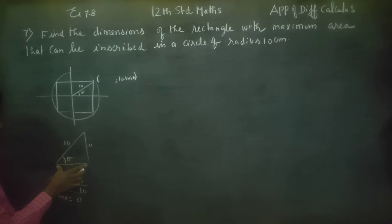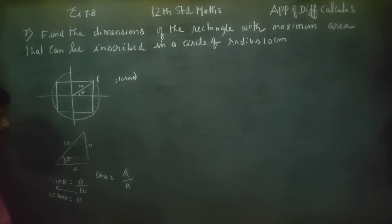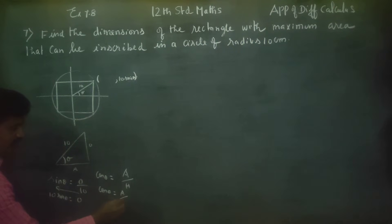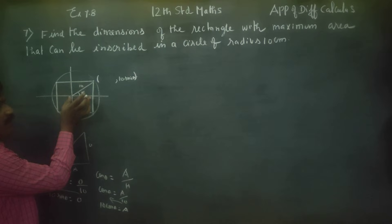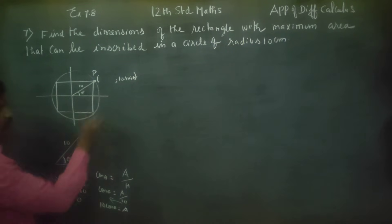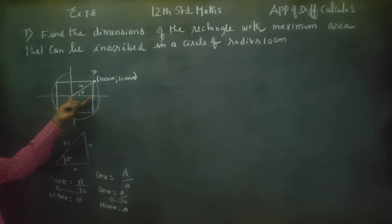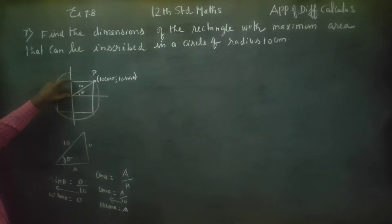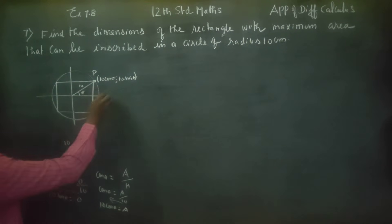Now for the x-coordinate: cos theta is equal to adjacent side by hypotenuse. So 10 cos theta equals the adjacent side. That adjacent side is the x-coordinate. So any point in general has x-coordinate 10 cos theta and y-coordinate 10 sin theta.